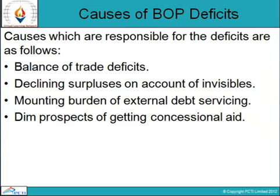Next is declining surplus on account of invisibles. A marked feature of India's BOP has been that it has been earning a net surplus on account of trade in invisibles. Large earnings on account of invisibles have been due to remittances from Indian workers abroad and surplus earnings on travel services. In the long run, the net position on invisibles would depend on the outcome of two opposing forces: the surplus on travel services, government transfers, and private transfers on one side, and deficits on investment income on the other.